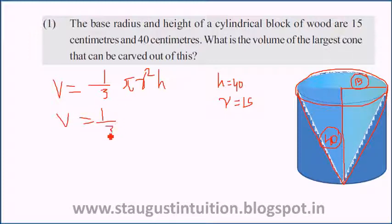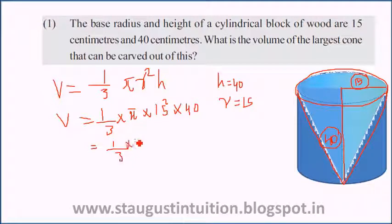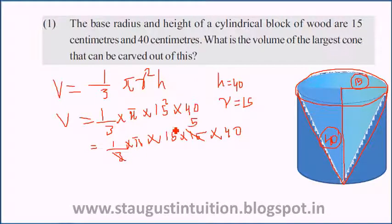So we calculate: one-third into π into radius squared. The radius is 15, so 15 squared into height. Height is 40. We get one-third into π into 15 squared, that is 15 into 15, and into 40.